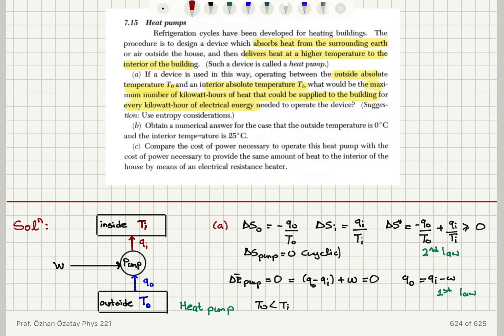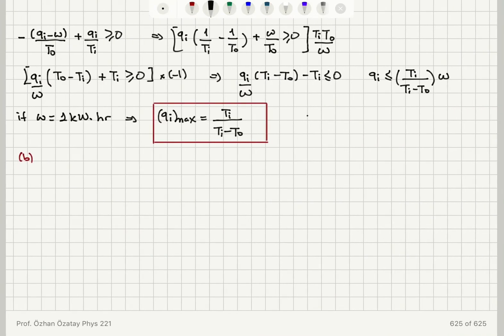In part B, obtain a numerical answer for the case where outside temperature is zero degrees Celsius and inside temperature is 25 degrees Celsius. Remember that T I and T out were absolute temperatures. So T out is zero degrees Celsius, which is 273 Kelvin, and T in is 25 degrees Celsius, which is 298 Kelvin.